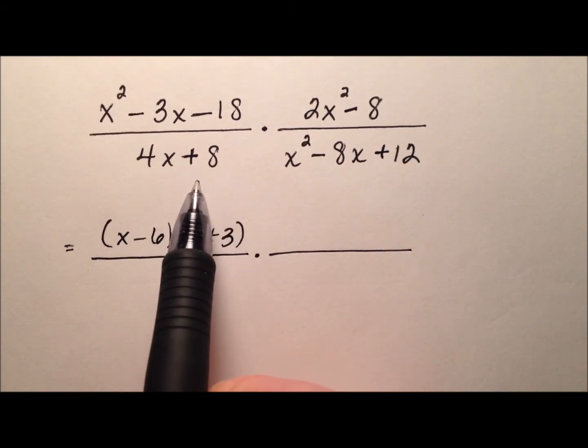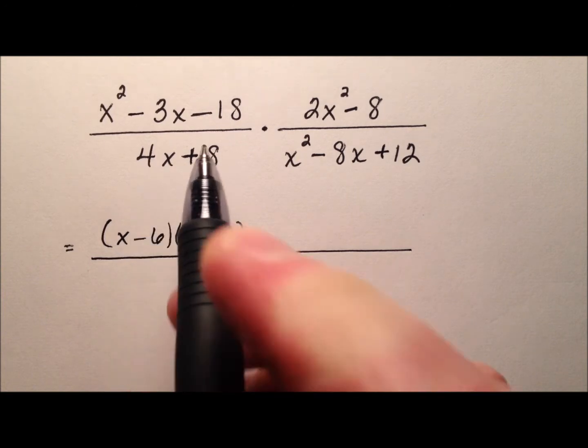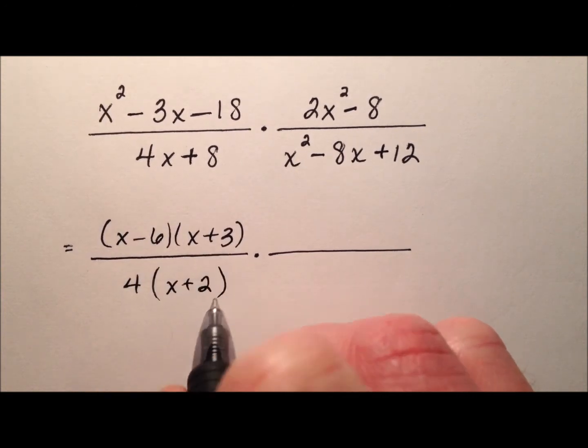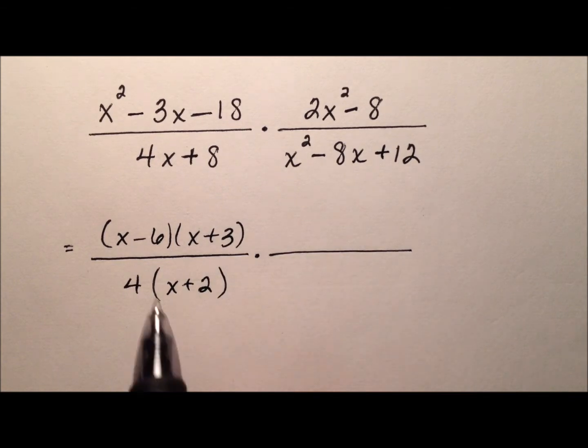And then this 4x + 8, it looks like I can take a greatest common factor of 4 out and I'll be left with x + 2. So far, no common factors. That's okay.